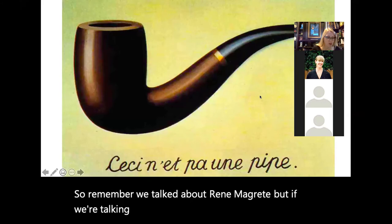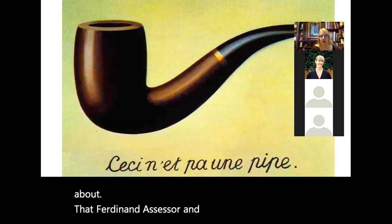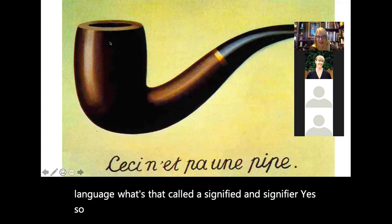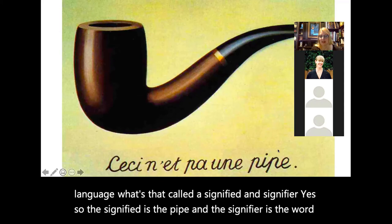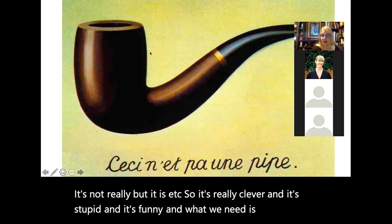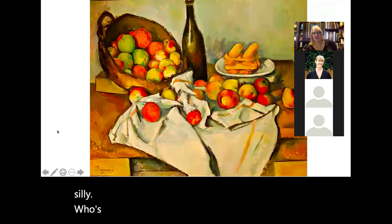Ferdinand de Saussure's linguistic theory — the two elements are the signified and the signifier. The signified is the pipe, the signifier is the word 'pipe.' When Magritte says 'Ceci n'est pas une pipe,' it's not really a pipe — but it is — and it's clever and funny and silly. We need funny art, and Magritte's work is actually very clever, funny, and silly.